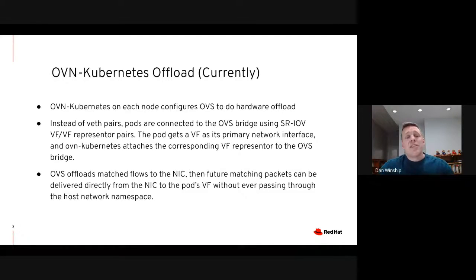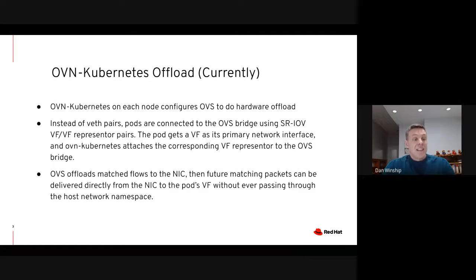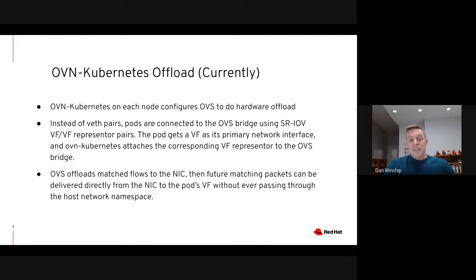So what does OVN Kubernetes offload look like currently? Well, if you're familiar with OVN offload on OpenStack, it's pretty similar. OVN Kubernetes tells OVS on each node to do hardware offload. Then instead of using VETH pairs to attach pods to the OVN bridge, we use SRIOV VF and VF representer pairs. From the host, this looks basically the same as using the VETH pair, but the difference is that the card can send traffic directly to the VF after OVS offloads the flow to the card telling it when to do so.